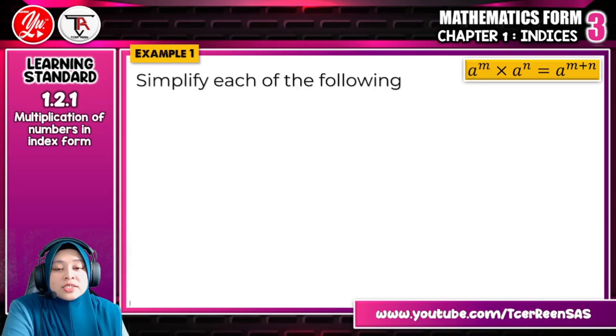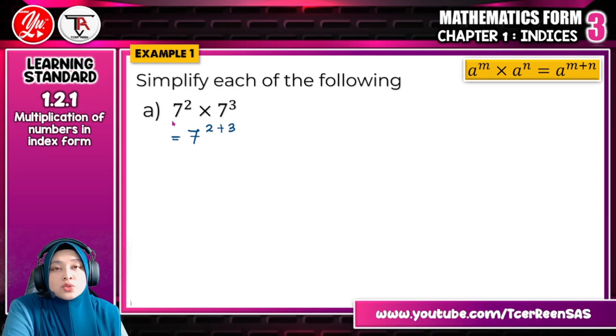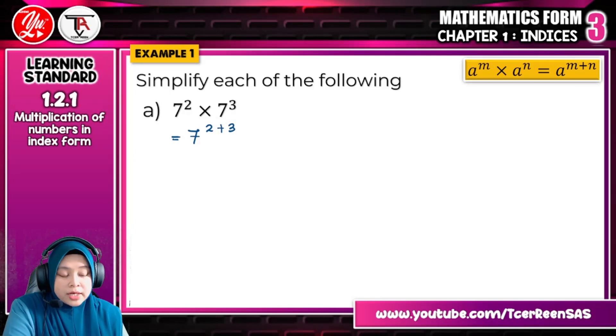Example 1, the question asks us to simplify each of the following. Question A, you can see here, 7 to the power of 2 times 7 to the power of 3. You have the same base which is 7, so you can use the law of indices here. You can write 7 as the base, no need to repeat it. You just do an operation for the indices, which is 2 and 3. For indices, if the operation for the base is times, multiply, maka indexnya mesti ditambahkan. We take 2 plus 3, you get 7 to the power of 5.